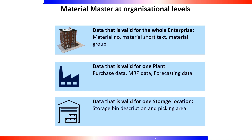These organizational levels are relevant for the external procurement process. Client, plant, and storage location matter when you enter data for purchasing, inventory management, and accounting. Other organizational levels can be relevant for other departments. For example, sales and distribution data is entered depending on the sales organization and the distribution channel. For warehouse management data, you must specify a warehouse number and storage type.